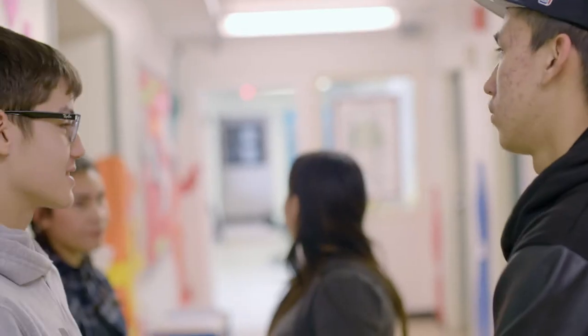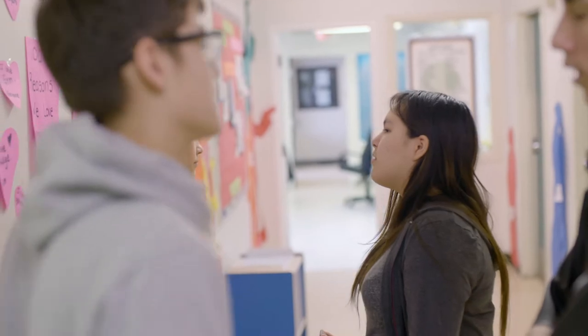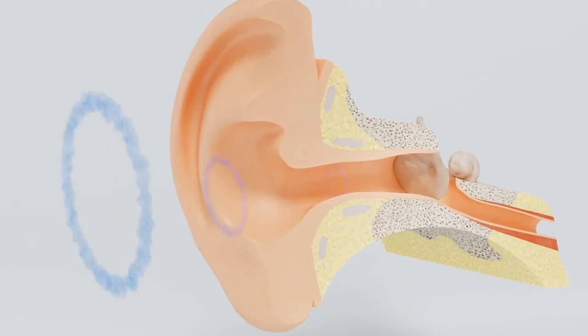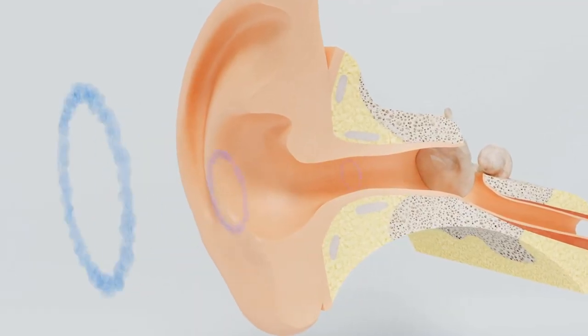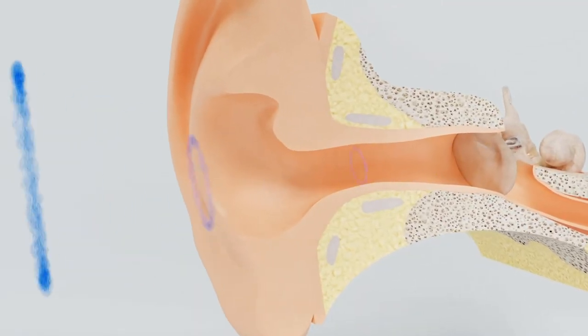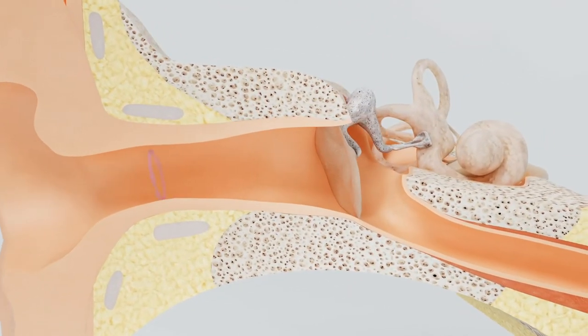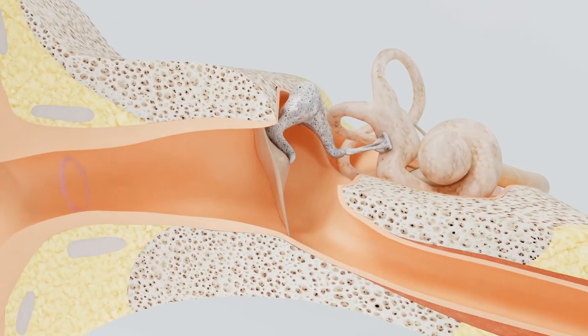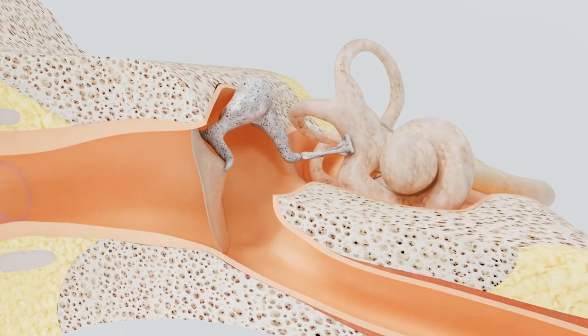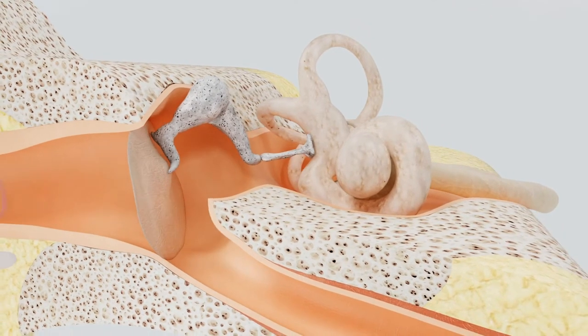Identification is the first step in intervention for a student with hearing loss. The ear is a complicated organ used to hear sounds. It takes sound waves from the air and transforms them into signals that the brain can understand. The ear has three main parts: the outer ear, middle ear, and inner ear.